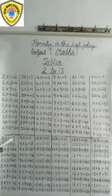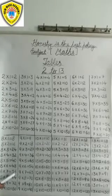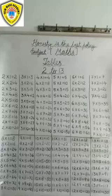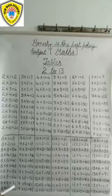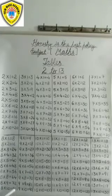8 1s are 8. 8 2s are 16. 8 3s are 24. 8 4s are 32. 8 5s are 40. 8 6s are 48. 8 7s are 56. 8 8s are 64. 8 9s are 72. 8 10s are 80.